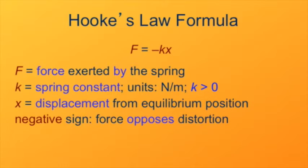The minus sign tells us that the force exerted by the spring opposes the distortion of the spring. So if you make the spring longer, X is positive, and the force will be negative in the opposite direction, trying to contract the spring and make it shorter again. If you compress the spring, make it shorter, X is negative. The force F will then be positive, trying to push the spring back to its equilibrium.